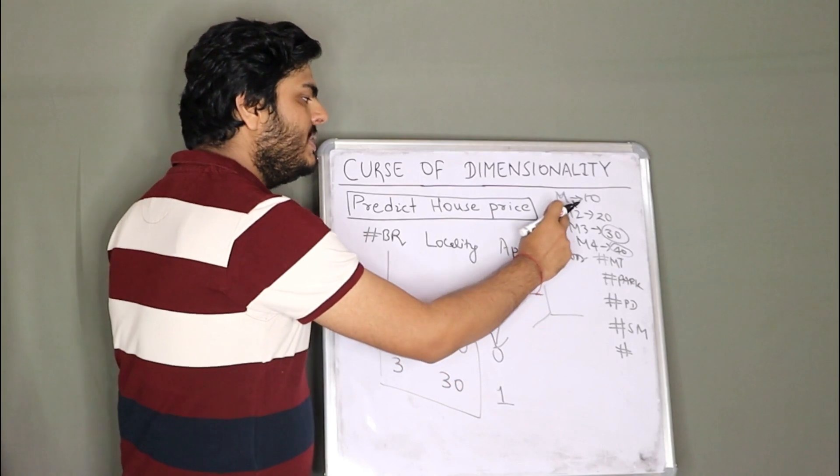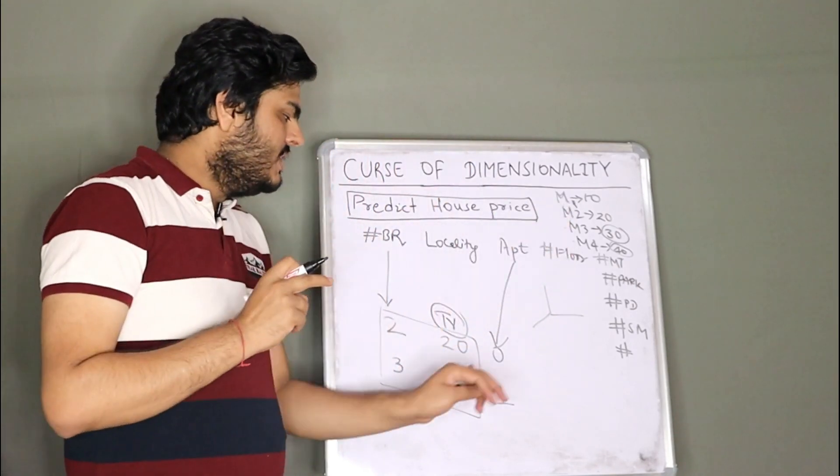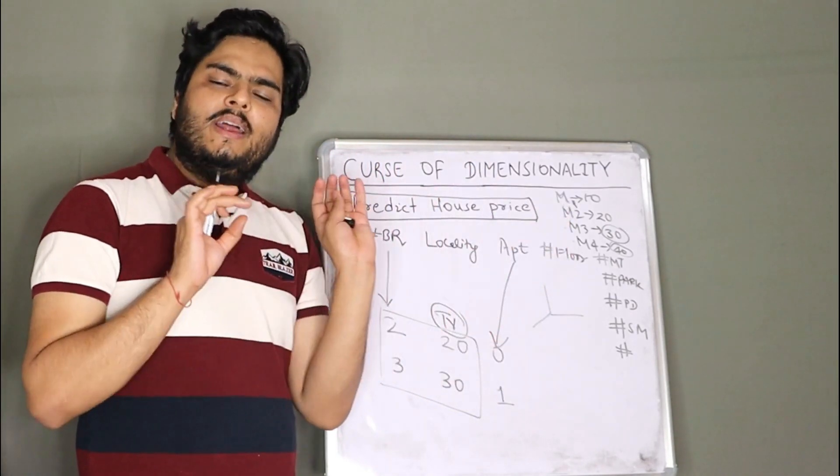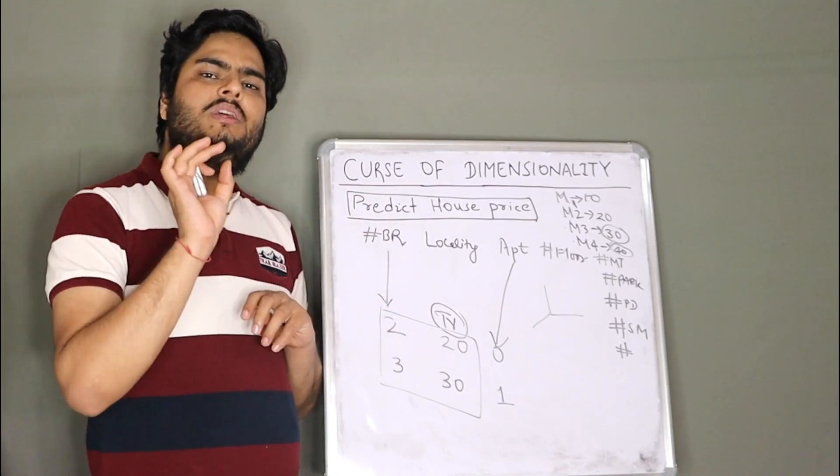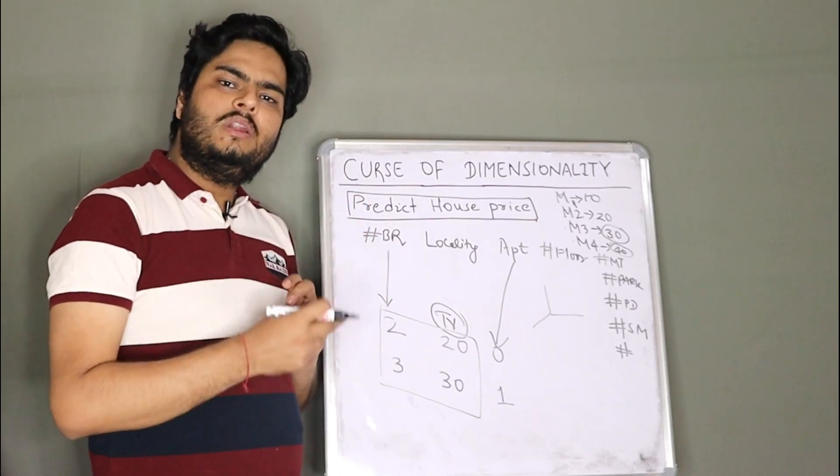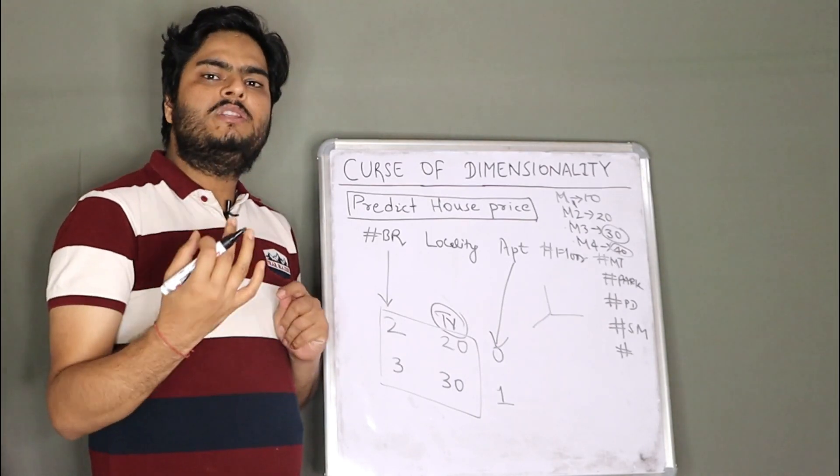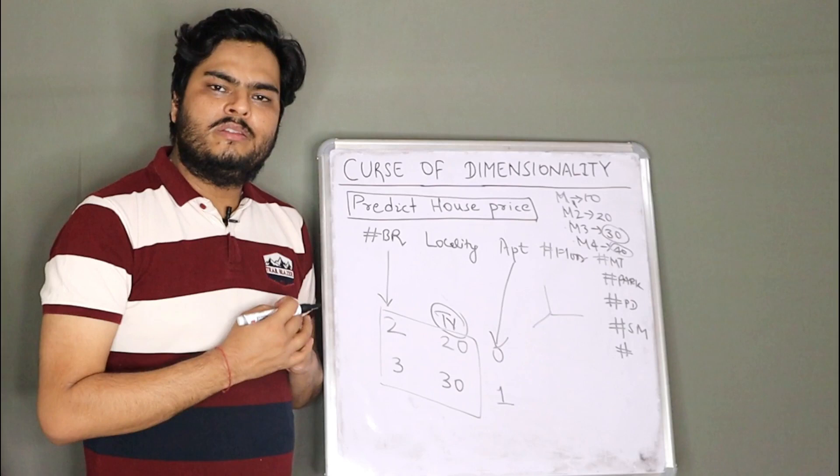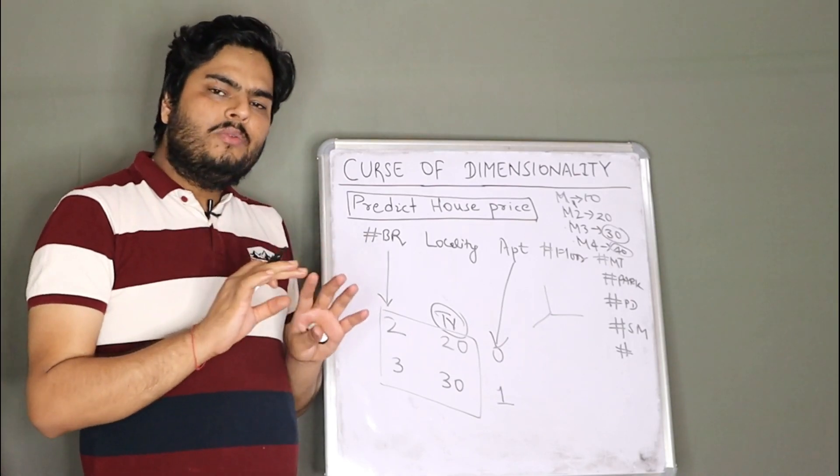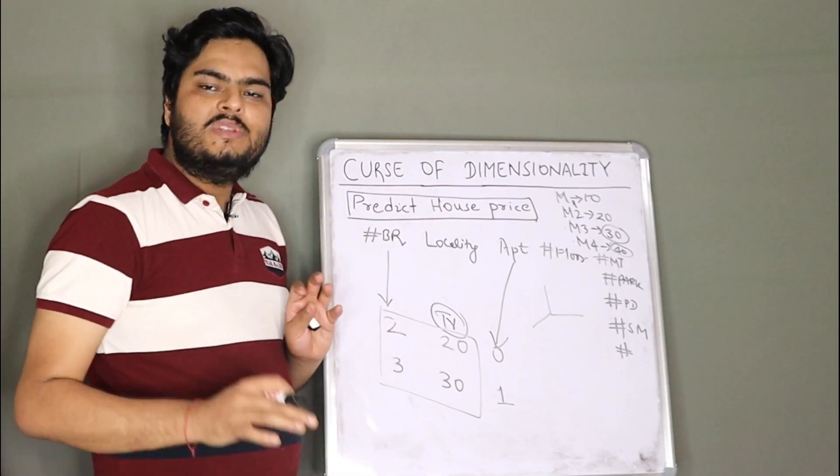So here I will stop at M2. Here I will not give one additional feature. And all those techniques, right? Feature elimination, forward elimination, backward elimination, recursive feature elimination, some feature reduction like principal component analysis, factor analysis, all those things revolve around curse of dimensionality only.